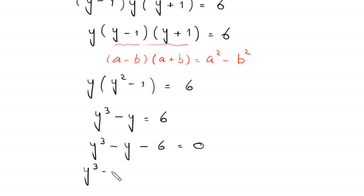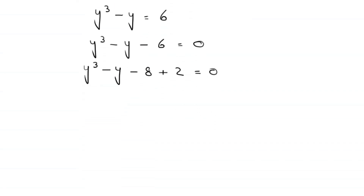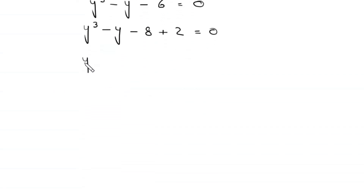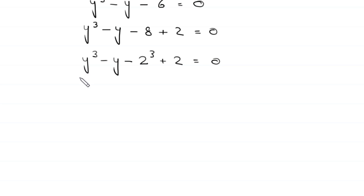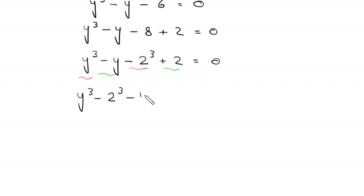We rewrite -6 as -8+2, so we have y³ - y - 8 + 2 = 0. Since 8 = 2³, this becomes y³ - 2³ - y + 2 = 0. Grouping: (y³ - 2³) + (-y + 2) = 0.